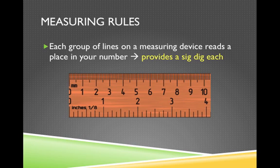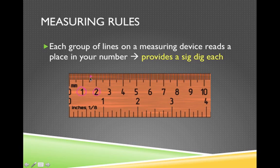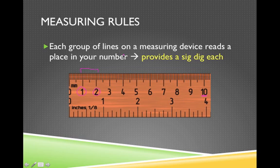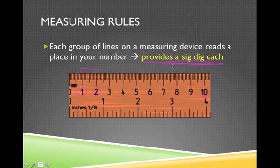Here's a quick picture of a measuring device — a cross section of a ruler showing delineations of different lines. We have the ones read by the big lines, the tenths read by the smaller lines, and we can even say we've got the tens column taken care of as well. The ruler draws them all differently to separate them — longer lines for the ones, shorter lines for the tenths. Each group of these lines on your measuring device reads a place in your number, and each group provides you with a significant digit — a digit that represents a real item in the real world.